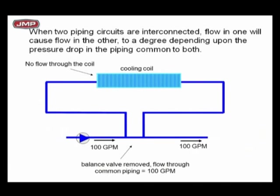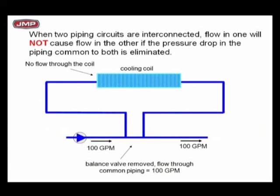The pressure drop between the T's determines the flow through the cooling coil in the secondary circuit. If there is no pressure drop in the common pipe, there will be no flow in that secondary pipe unless I add a pump. That's what primary secondary is all about — just that simple. When the two piping circuits are interconnected, flow in one will not cause flow in the other when there's no pressure drop between the two T's. The key is understanding that pressure drop between the two T's in the common pipe controls the flow in each circuit.